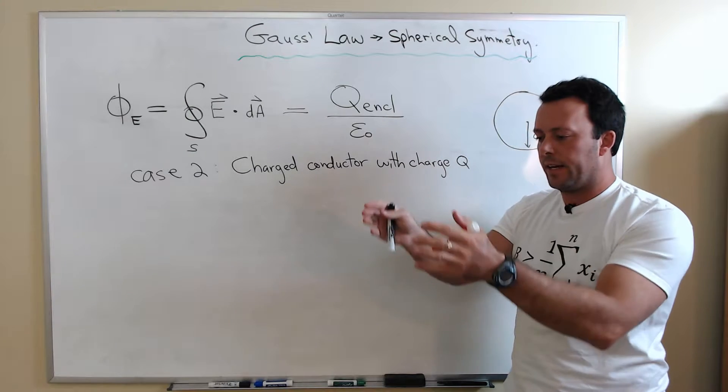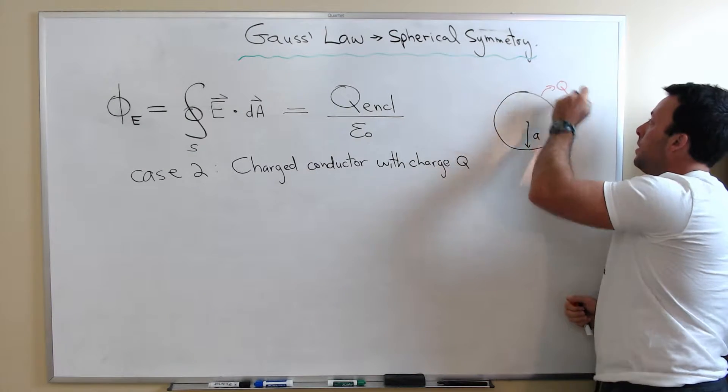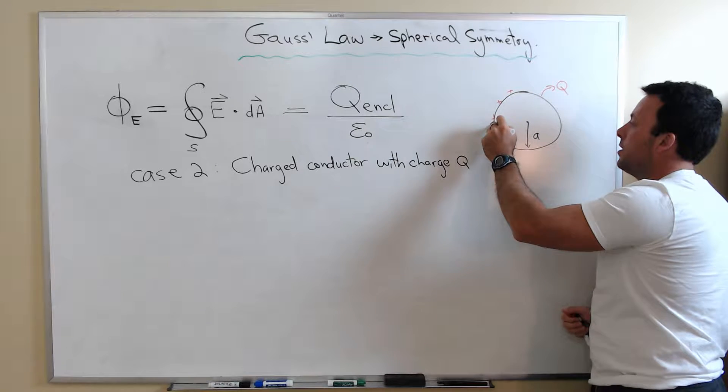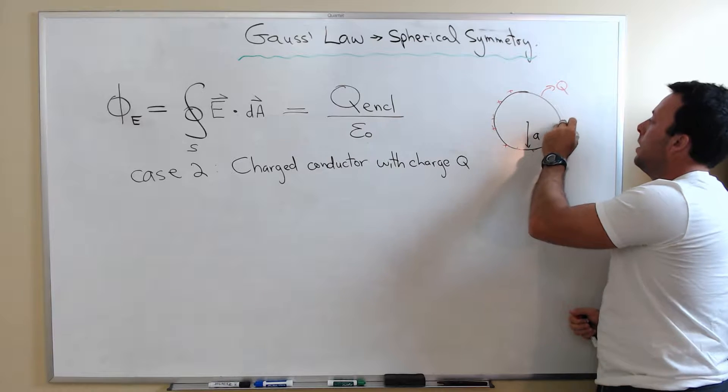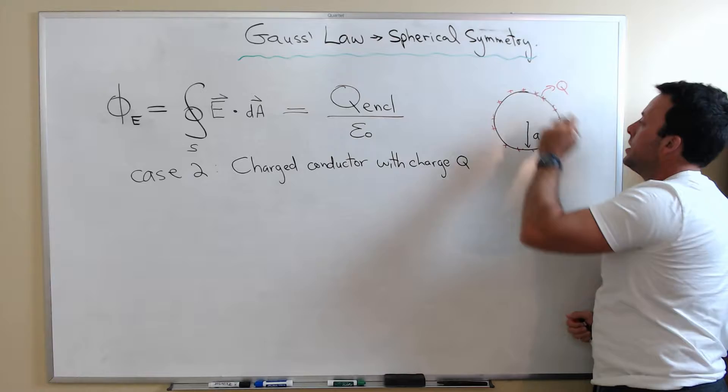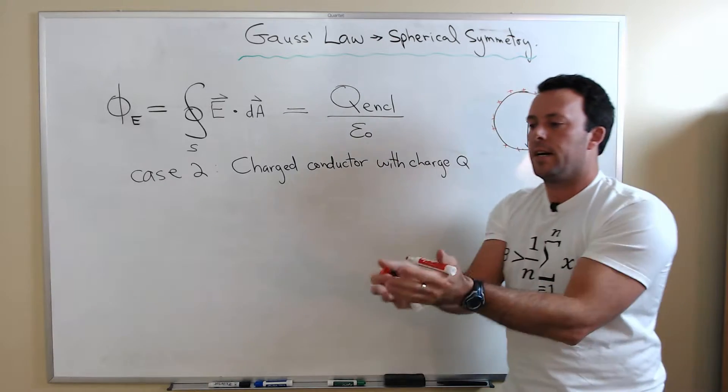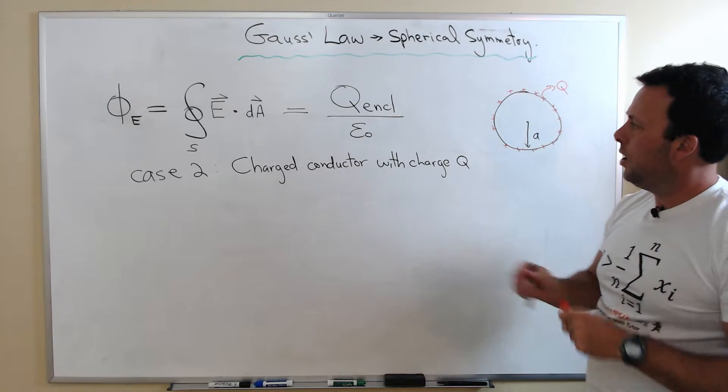And what's going to happen with the conductor is all those charges are going to reside at the surface. So we're going to have a bunch of charge. And if it's a spherical object, the charge will be right at the surface of the conductor, kind of uniformly distributed on the surface.